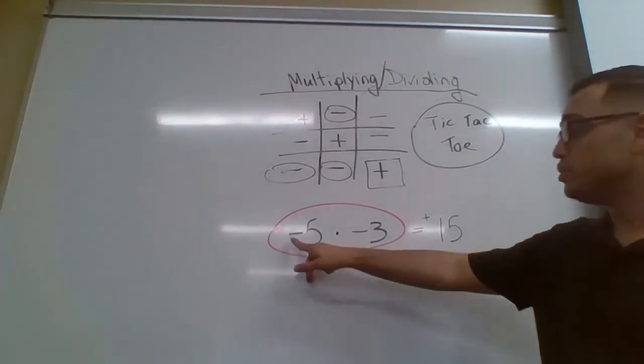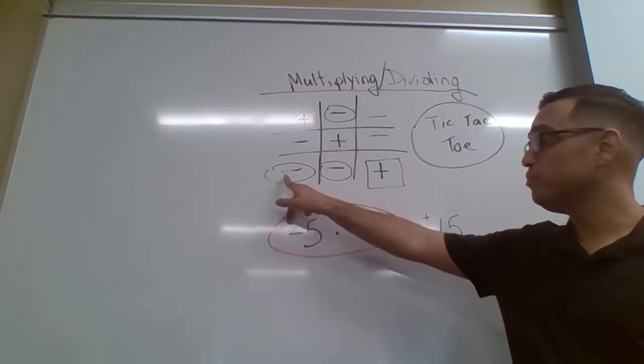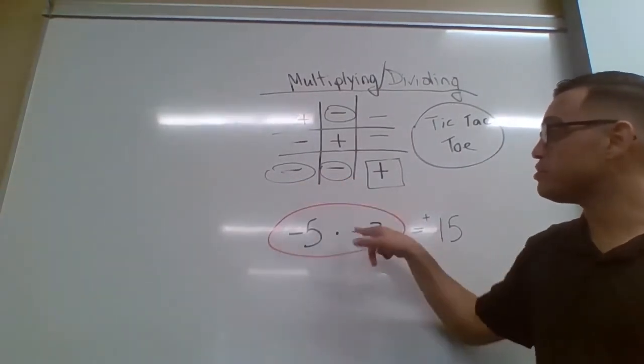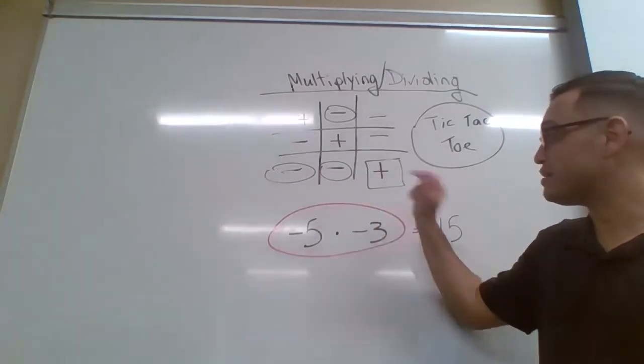So again, you ask them to circle the symbol. This is a negative, and here's another negative, so a negative times a negative will give you a positive.